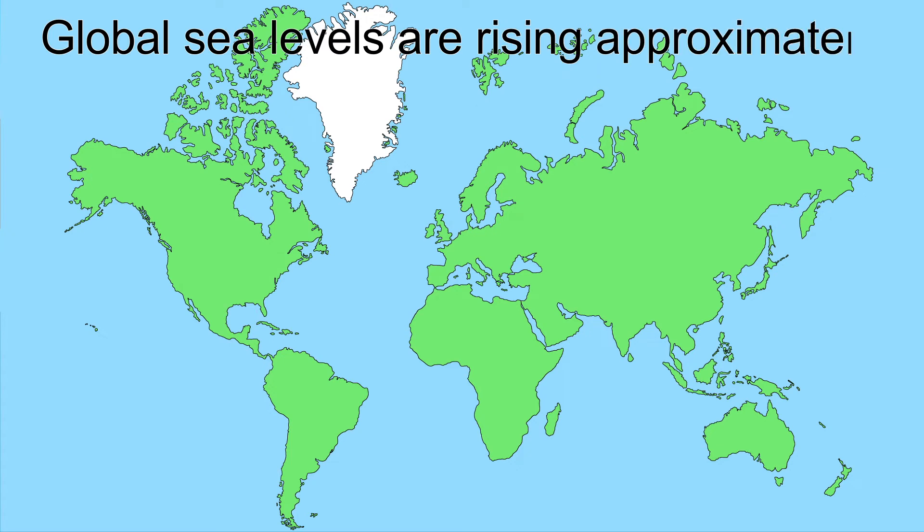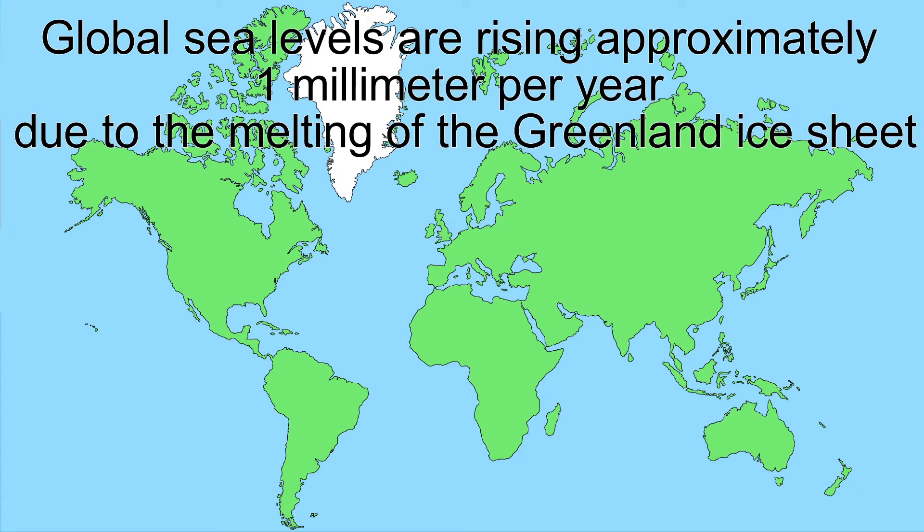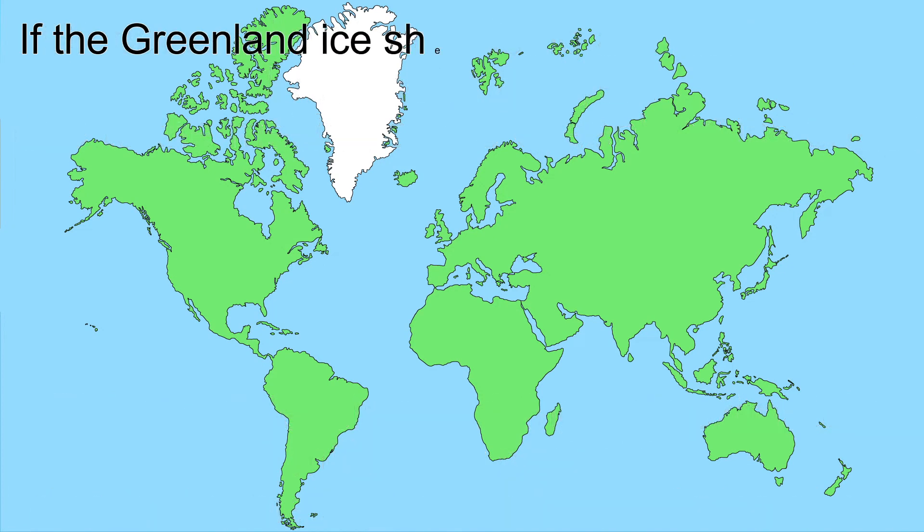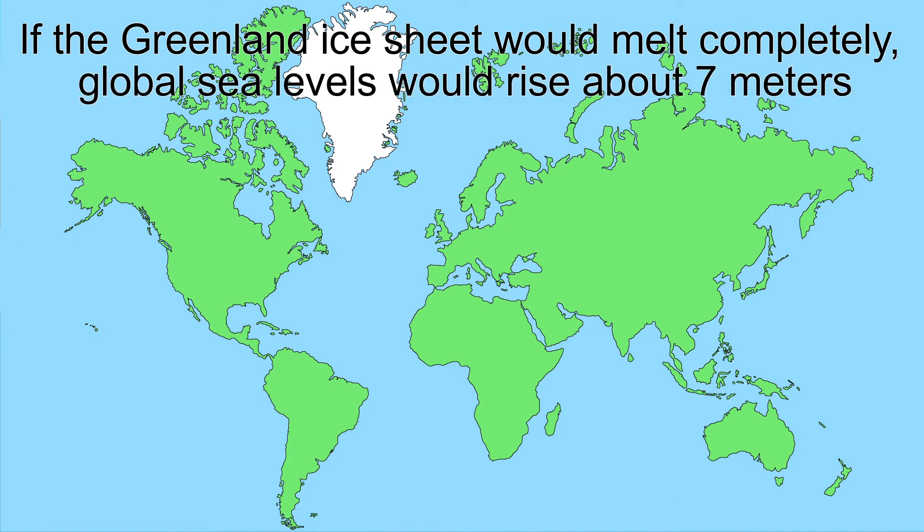Global sea levels are rising approximately 1 mm per year due to the melting of the Greenland ice sheet and approximately 1 mm per year due to the melting of the Antarctic ice sheet. If the Greenland ice sheet would melt completely, global sea levels would rise about 7 meters.